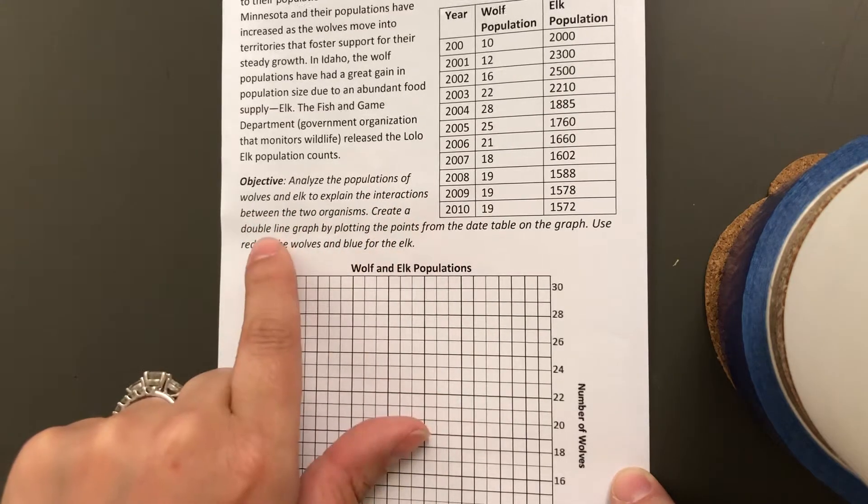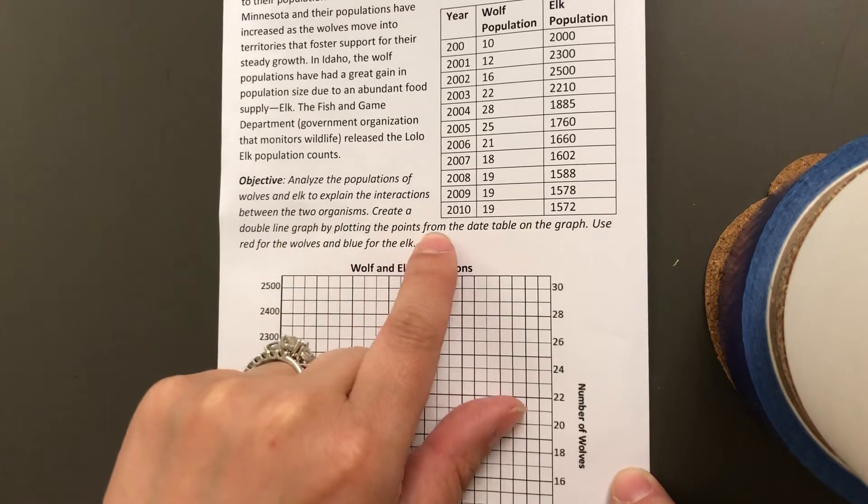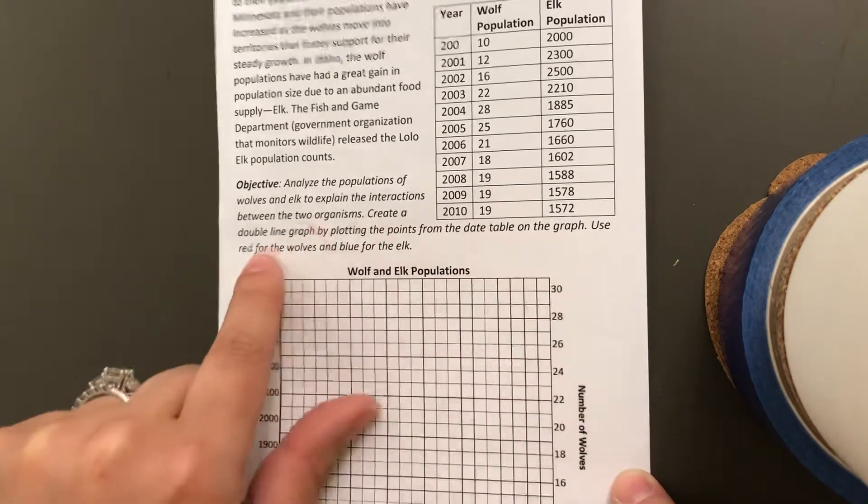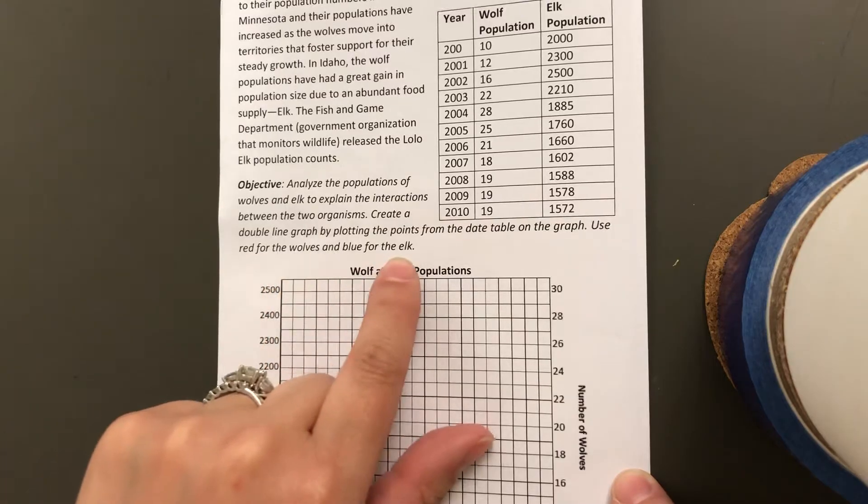You need to create a double line graph by plotting the points from the data table above. Use red for wolves and blue for elk.